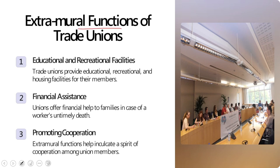Extramural functions of trade unions can be understood based on educational and recreational facilities. Trade unions provide educational, recreational, and housing facilities for their members. Unions raise funds through subscriptions from members and spend them for the welfare of workers. Financial assistance also happens to be one extramural function, including in cases of workers' untimely death.